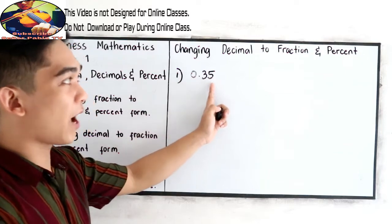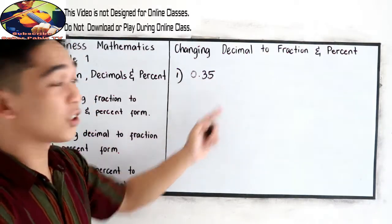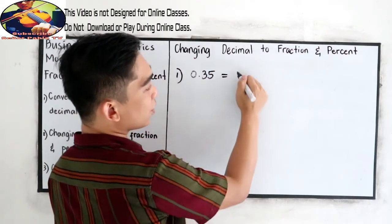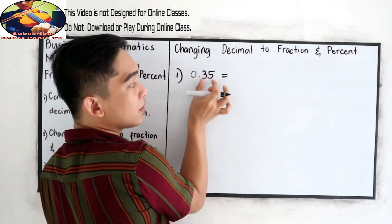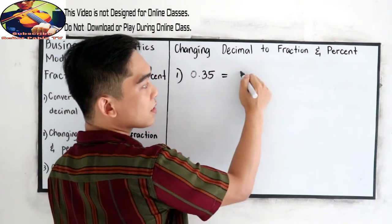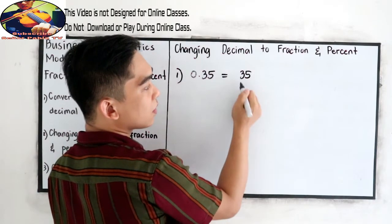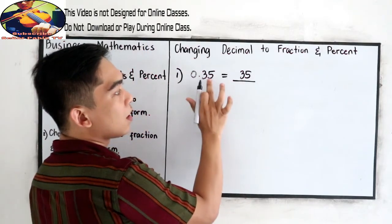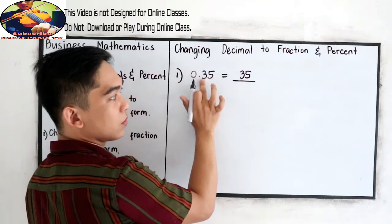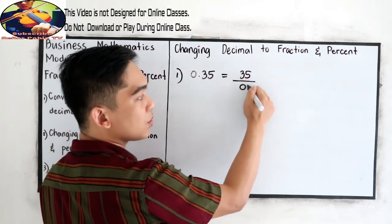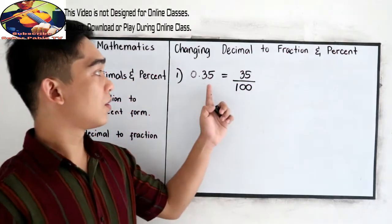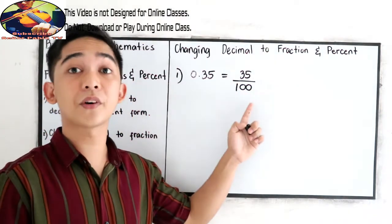Change to fraction and write into its percent form. So 0.35, the fraction, let's first get the fraction. So just copy our number on the decimal part that is 35 over, just count the decimal places. So 1, 2. So we need to have two zeros in our denominator, then write 1. So this is 35 over 100.